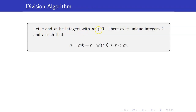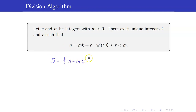Here, n and m are integers with m being strictly greater than 0. Take note that n can be positive or negative. There exist unique integers k and r such that n equals mk plus r, with r between 0 and m, strictly less than m. In order to establish the existence of k and r, we will consider the set S of all numbers of the form n minus mt, where t is an integer and n minus mt is greater than or equal to 0.